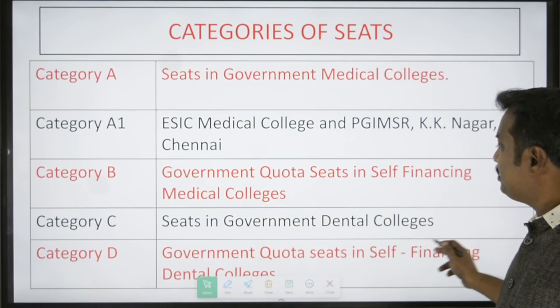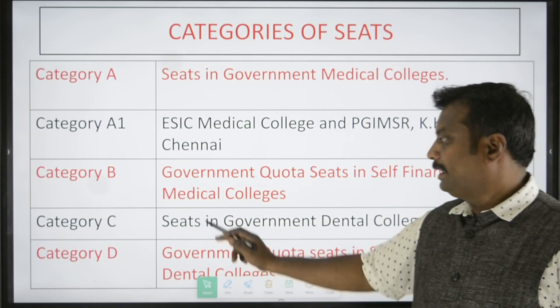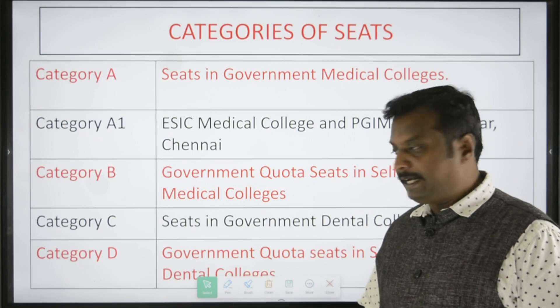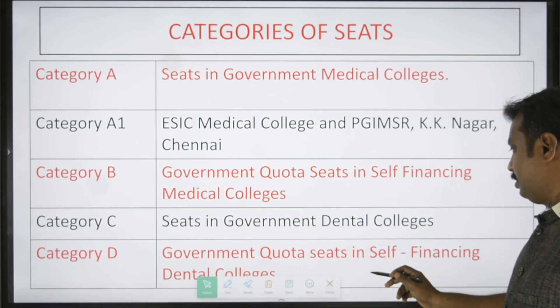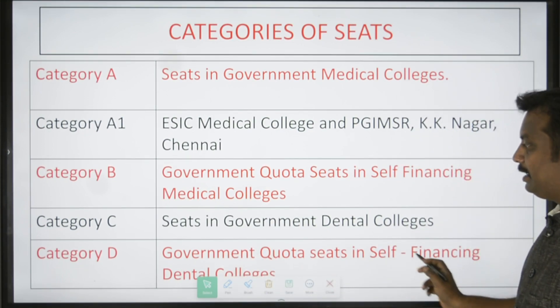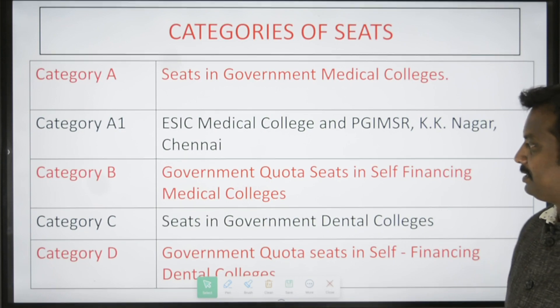For dental college seats, that is Category D. Category D is the government quota in self-financing dental colleges.